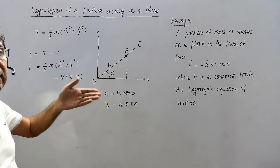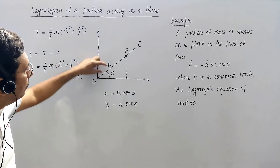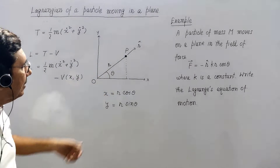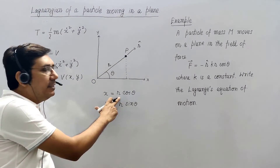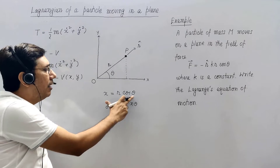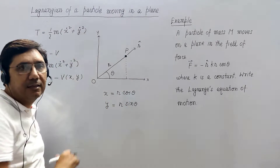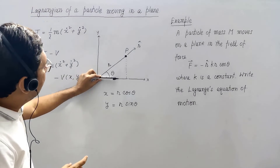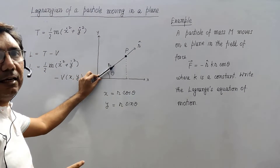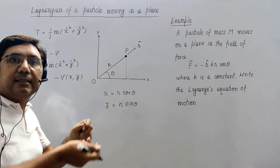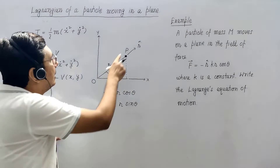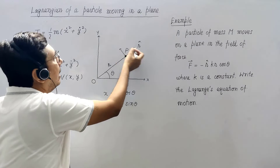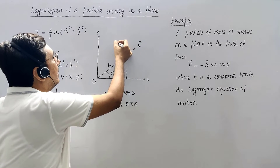So the motion of this particle in polar coordinates uses r and theta. The relationship between Cartesian and polar coordinates is: x = r cos(theta) and y = r sin(theta). The direction of theta-hat is perpendicular to r-hat, in the direction in which theta is increasing.